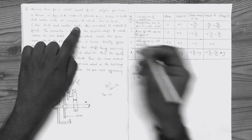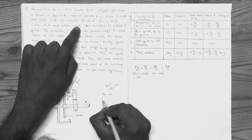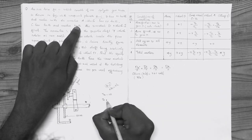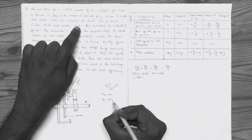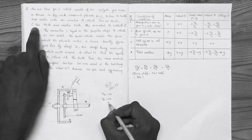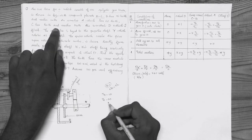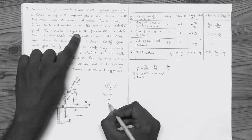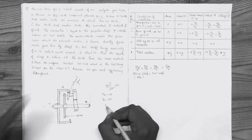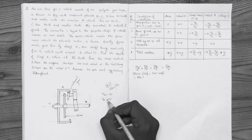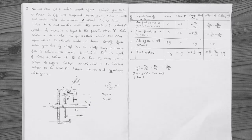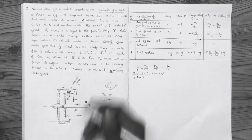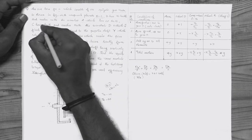A has 60 teeth, so Ta is equal to 60. Then C has teeth — it meshes with the sun wheel D, and C has 20 teeth.